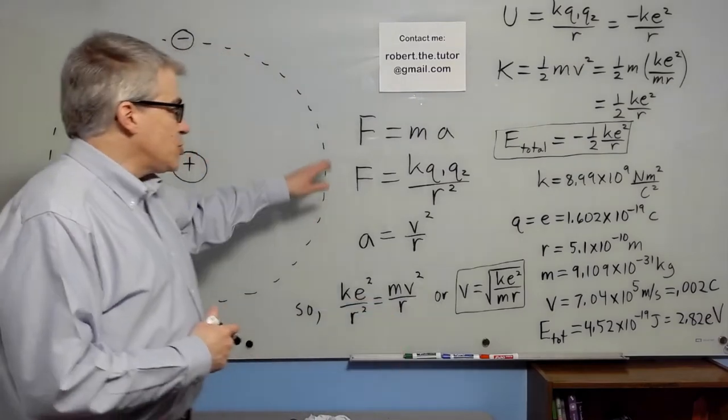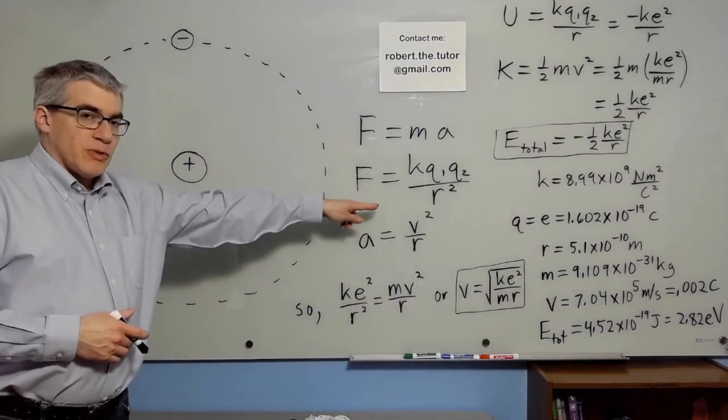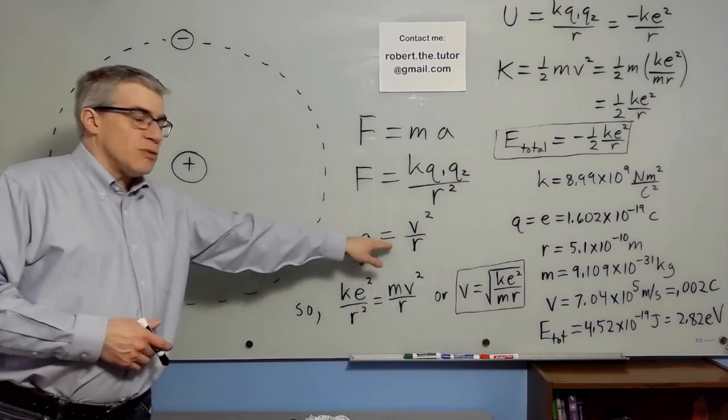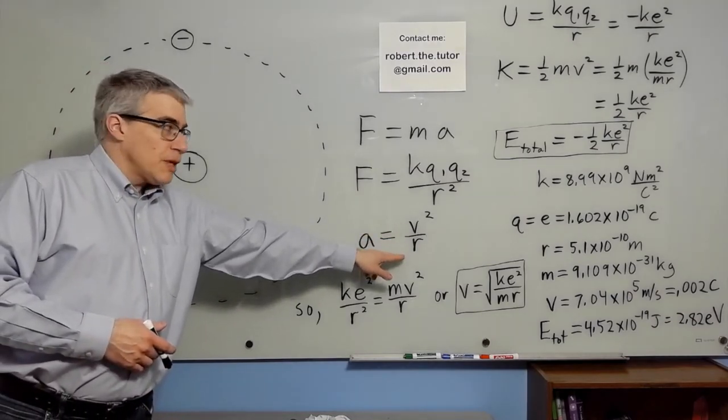Well, the force of attraction is KQ1Q2 over R squared, Coulomb's law, and anything going in a circle has A equals V squared over R, and F equals MA.